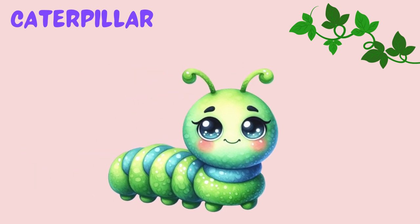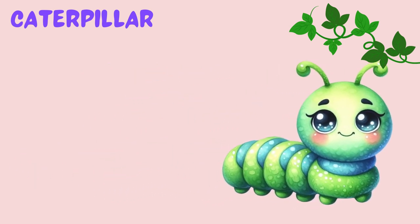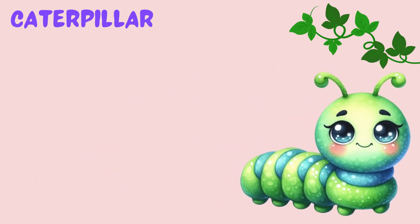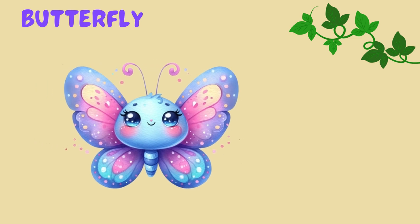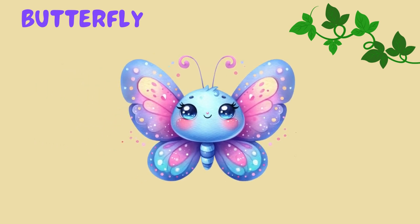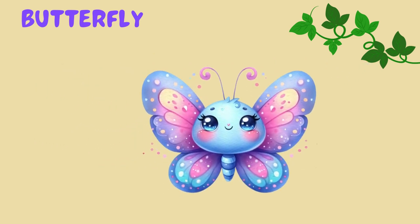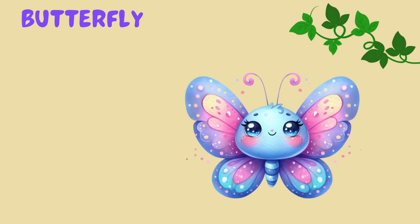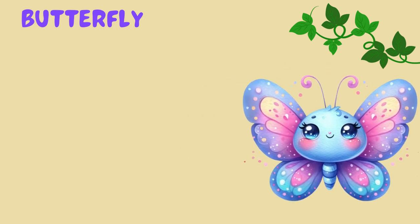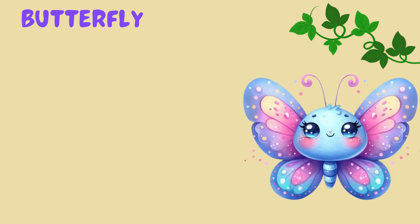Caterpillar. This is a caterpillar. A caterpillar turns into a beautiful butterfly. This is a butterfly. A butterfly has beautiful wings and it flies in the garden.